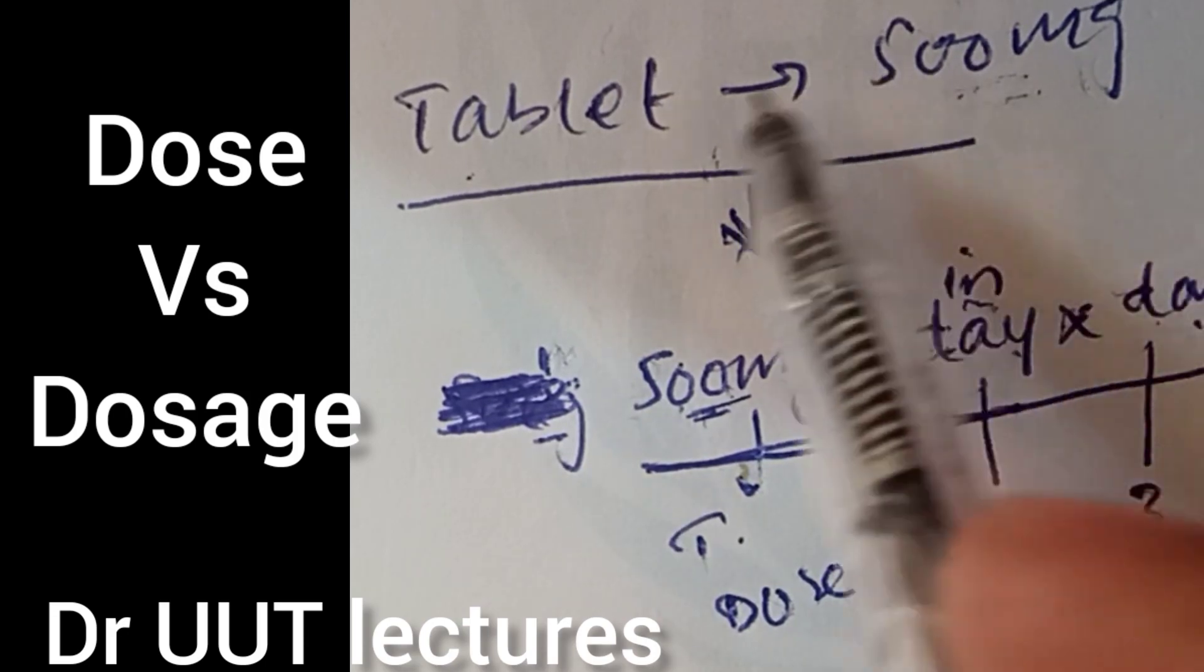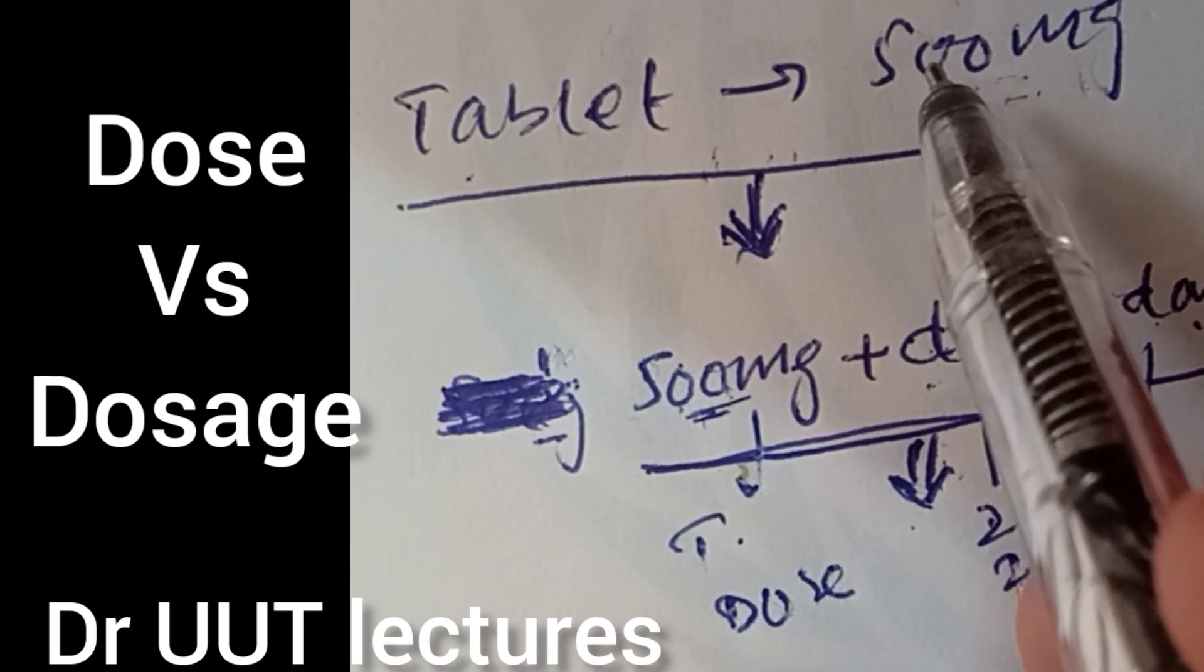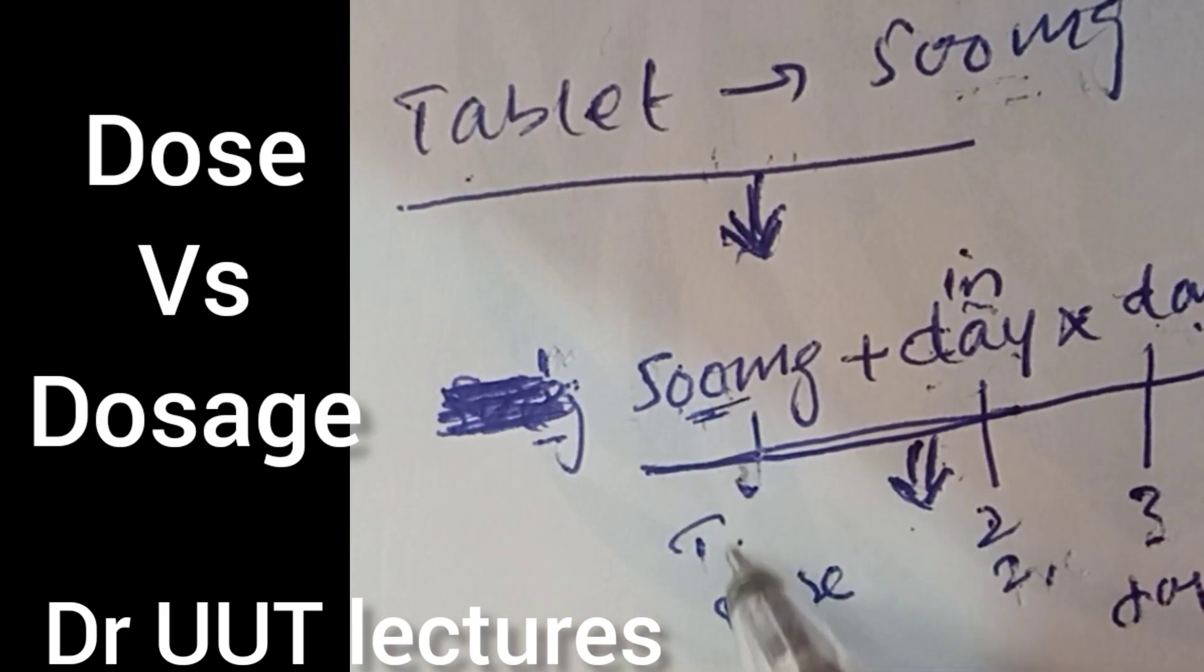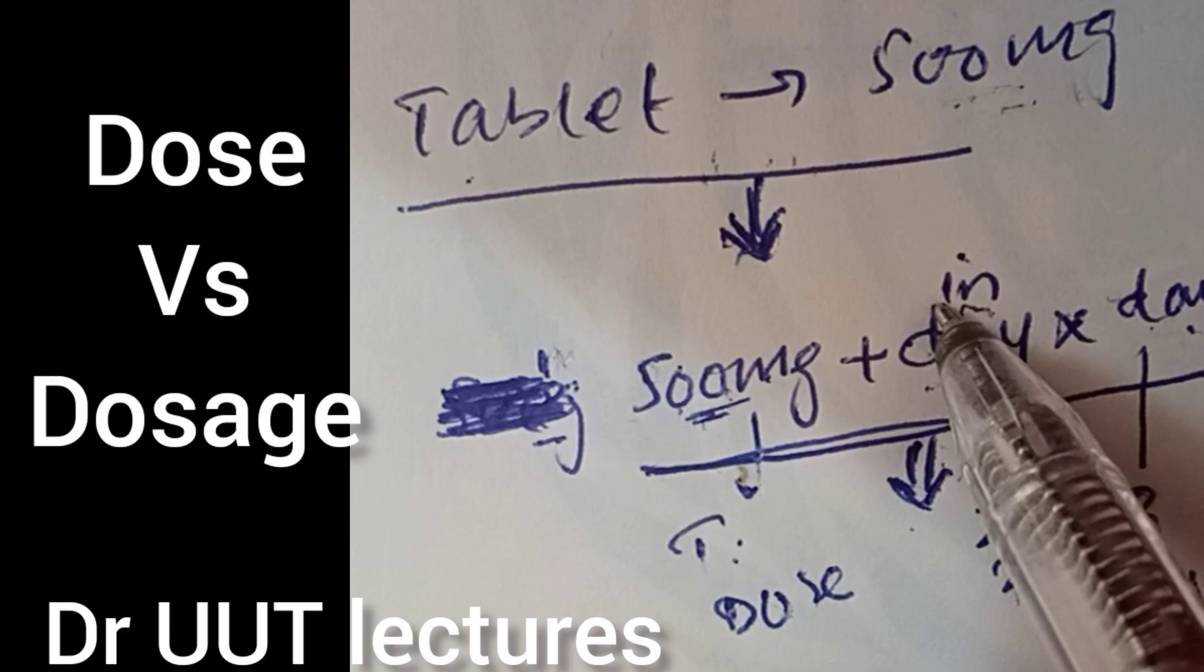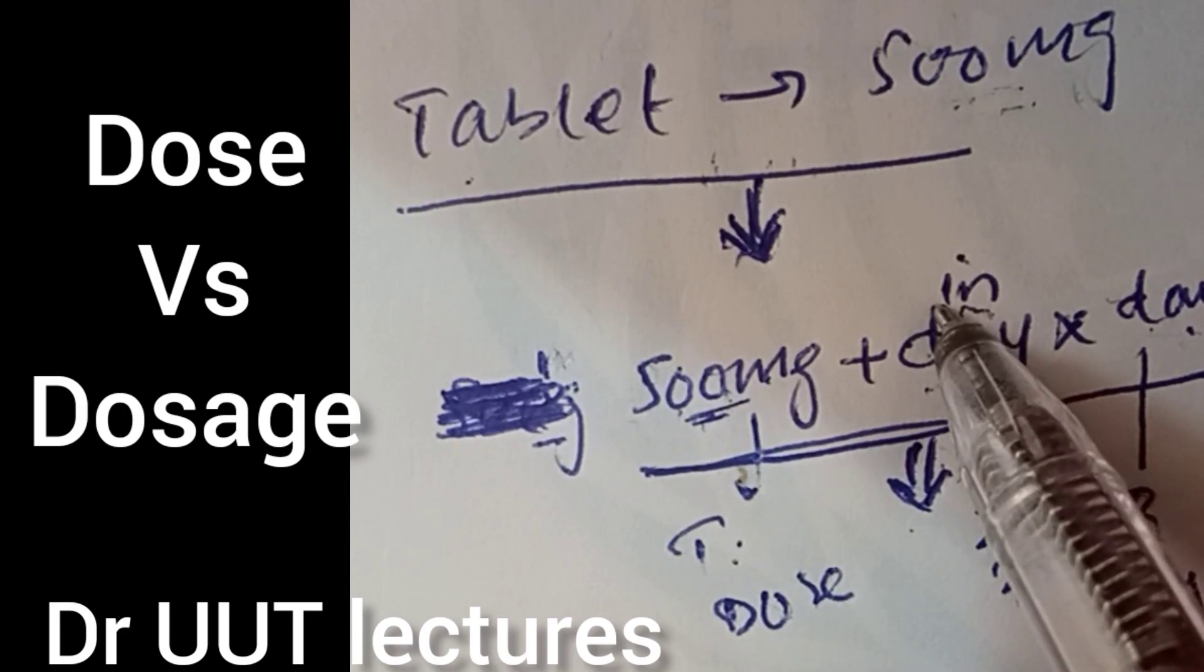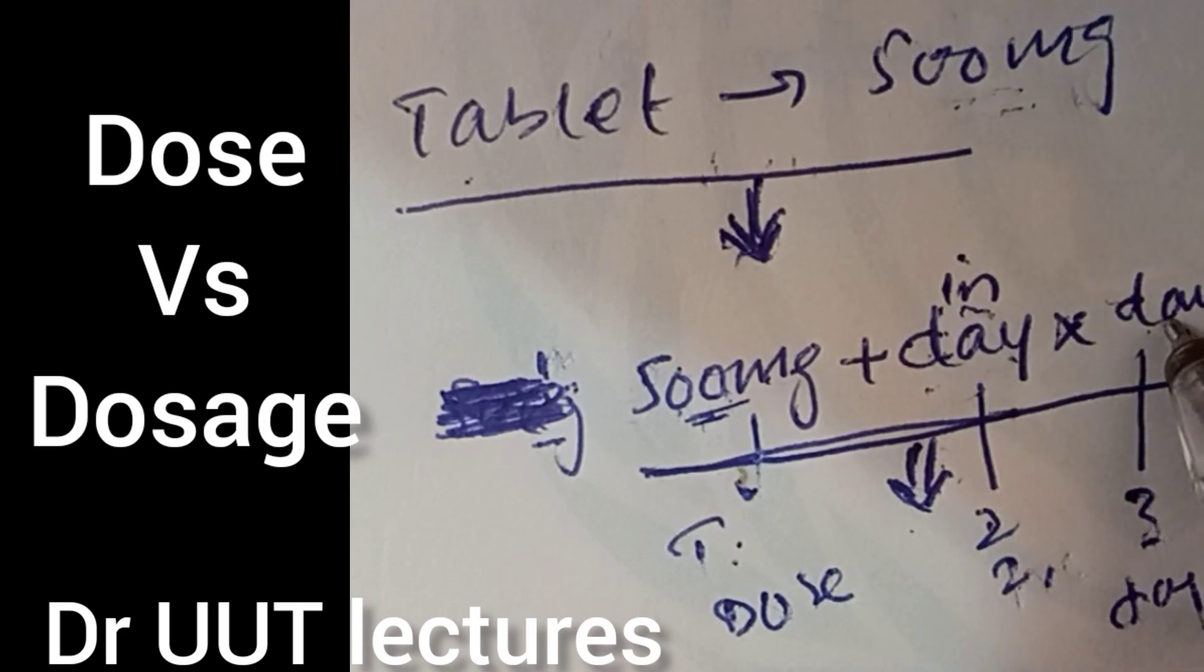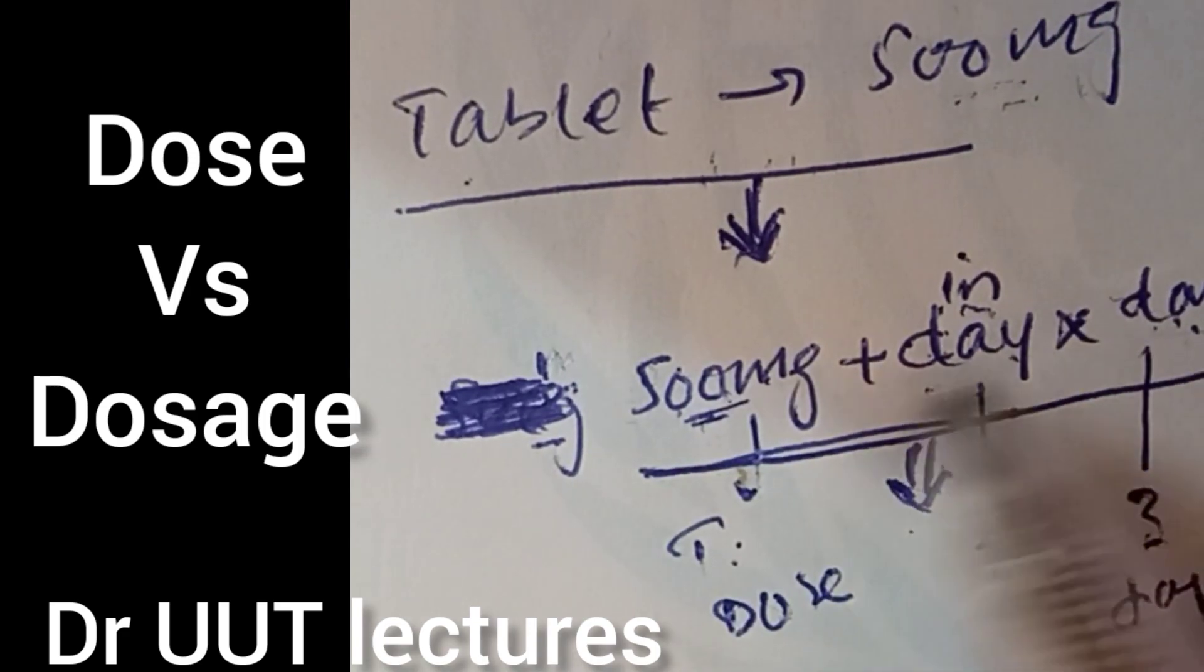Dose is the amount of the drug that you take at a specific time. The dose that you take for how long in a day means two times or three times a day, and then for how many days you take it.